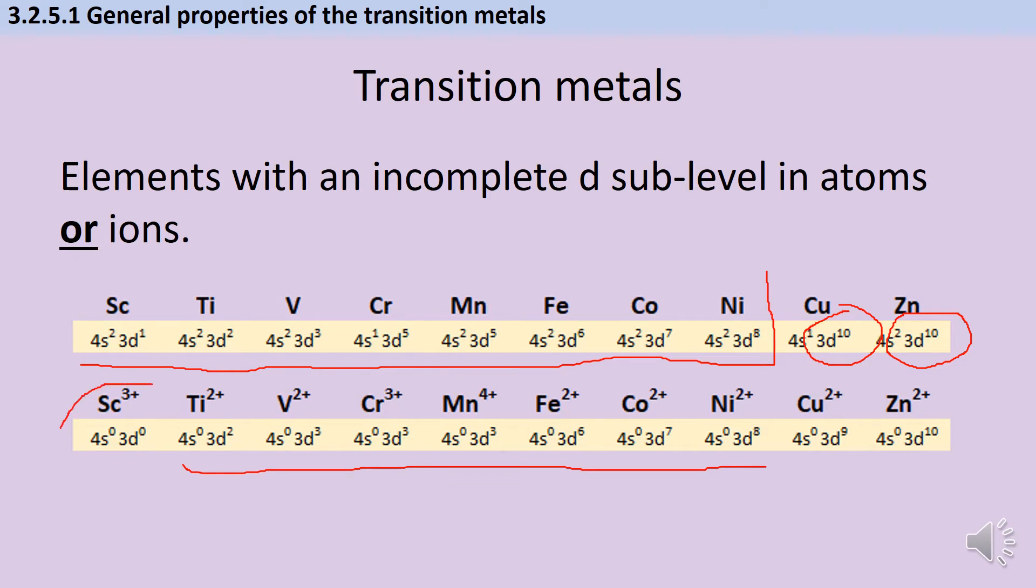Scandium doesn't. Scandium actually completely empties out its d subshell as well, but we do usually still regard it as a transition metal because in the atomic form it has an incomplete d subshell. When we get to copper and zinc making ions, when copper makes ions, now it does have an incomplete d subshell. But in zinc, the d subshell is still full, so zinc is not a transition metal.